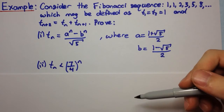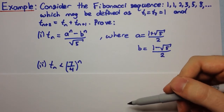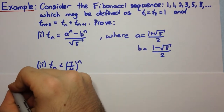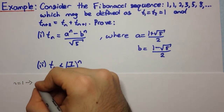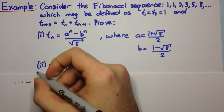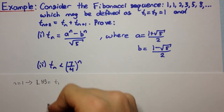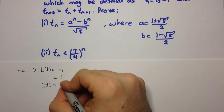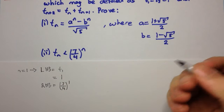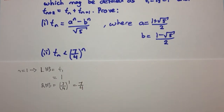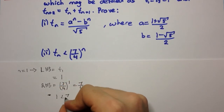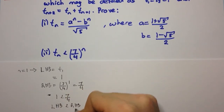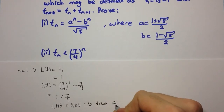We want to prove, as in the previous video, in step 1 for n equals 1 and n equals 2, because this recurrence relies on two terms. To prove first for n equals 1: the left-hand side is equal to t_1, which equals 1. The right-hand side is equal to (7/4)^1, which is 7/4. And we can say that 1 is less than 7/4, so it's true for n equals 1.